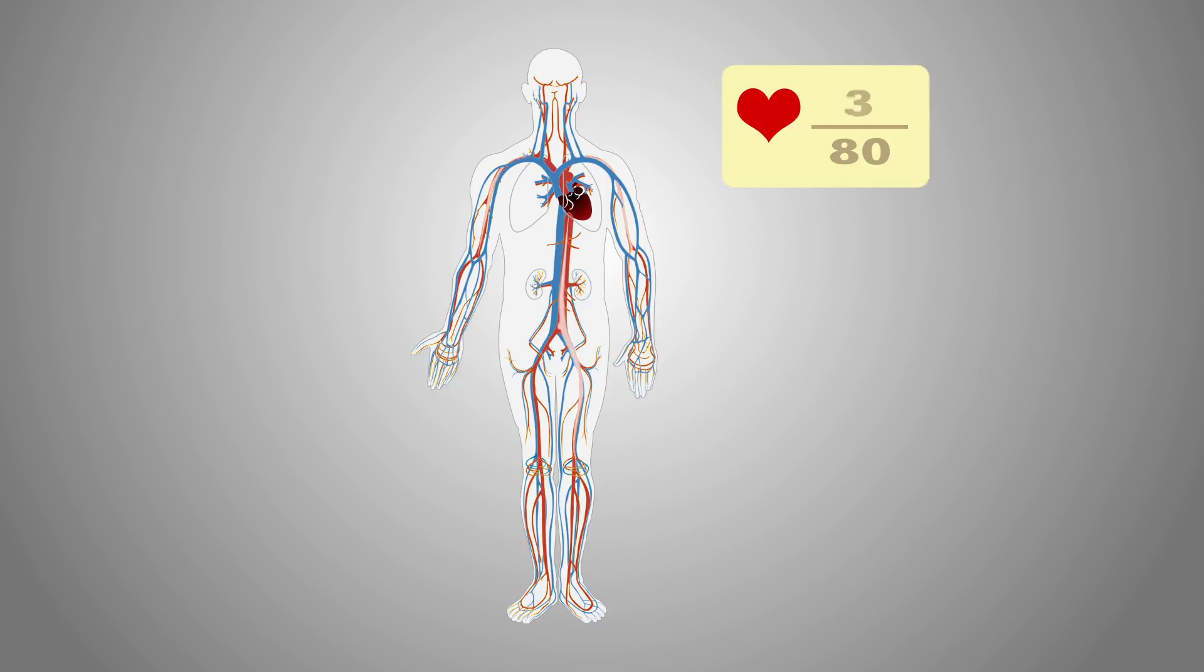The top number in your blood pressure measures the pressure in the arteries when the heart is pushing blood throughout your body. A normal reading is about 120. The bottom number measures the pressure in the arteries in between heartbeats when the heart is relaxing. Normal is around 80.